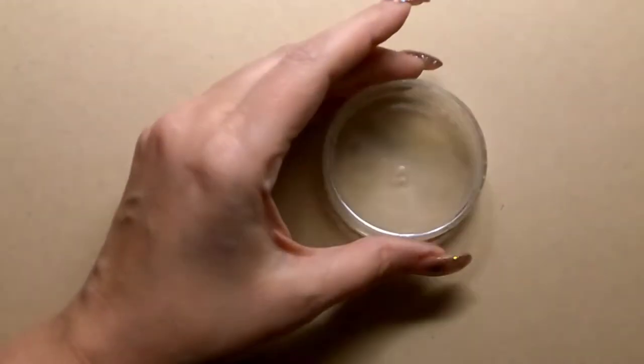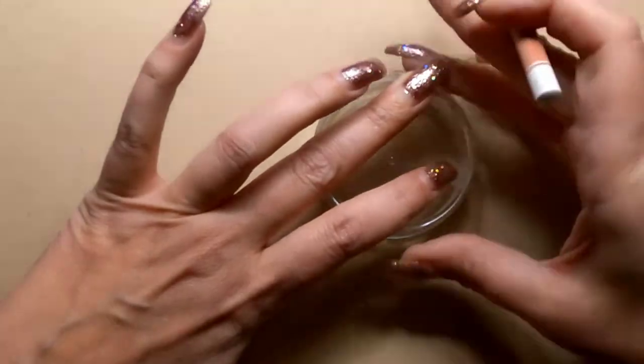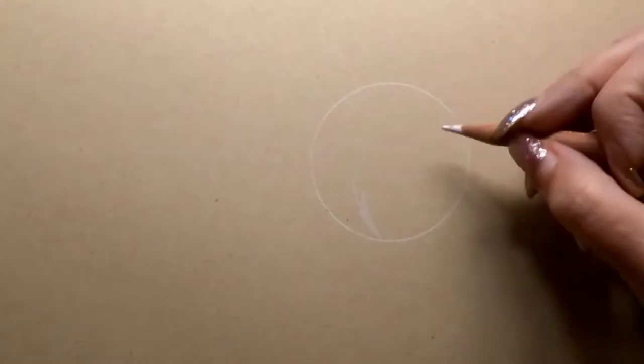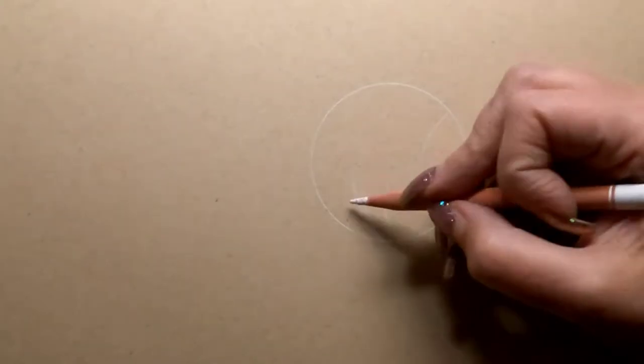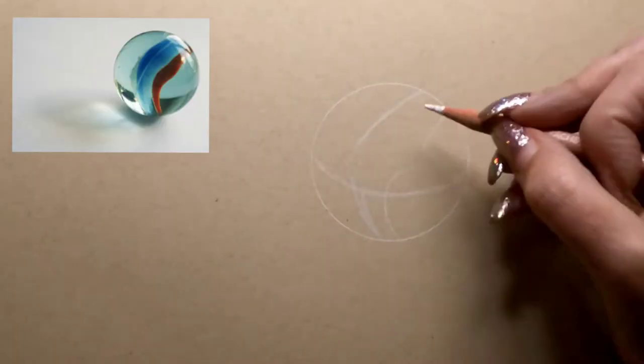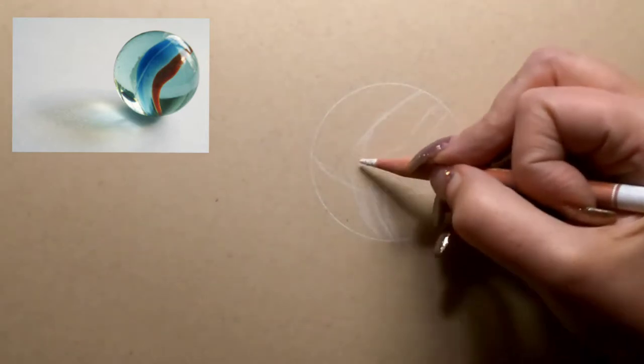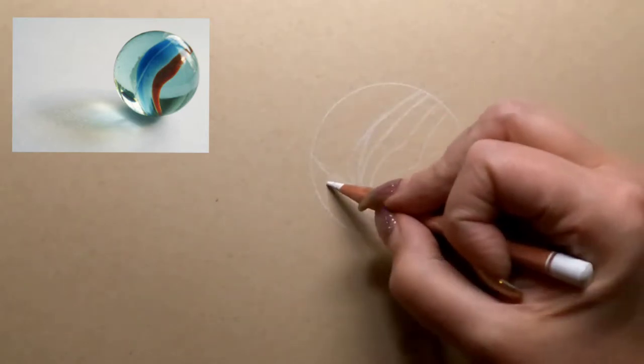Today we're going to be doing a realistic marble in the Caran d'Ache Luminance colored pencils. So I'm going to start my drawing. You just need something round—it could be a lid to a jar or anything round to get the size of the marble that you want to do.